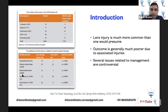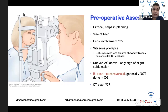Similarly, in posterior segment damage from trauma — endophthalmitis, vitreous hemorrhage, retinal detachment — you always see that some sort of lens involvement is also sometimes present. Several issues related to the management of the lens are controversial. A preoperative assessment is extremely important and critical in all trauma cases.